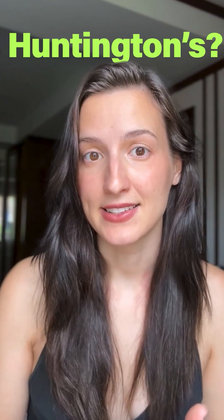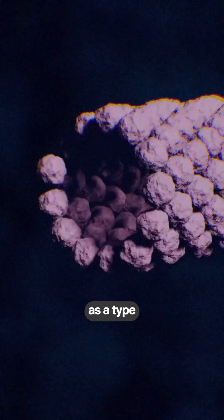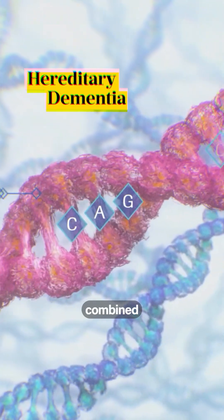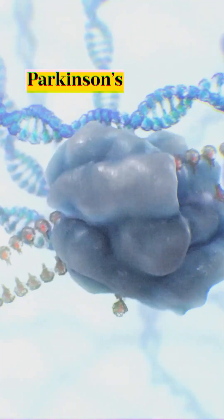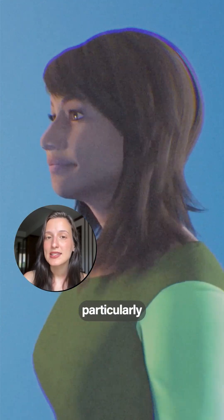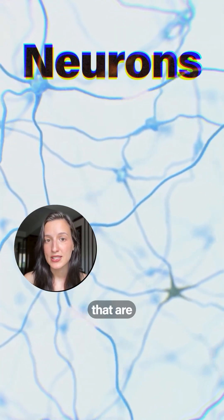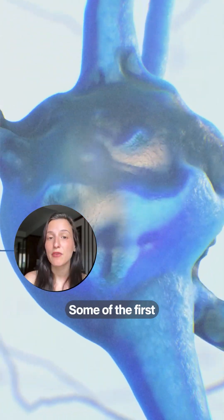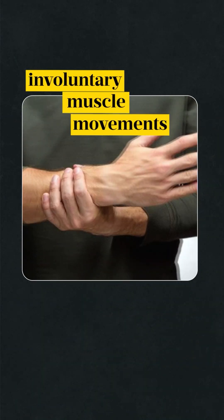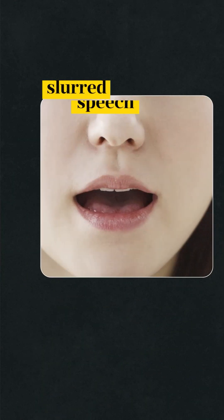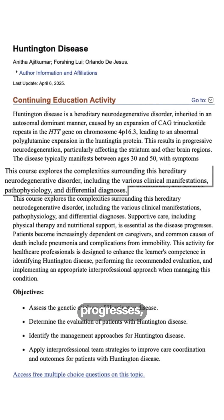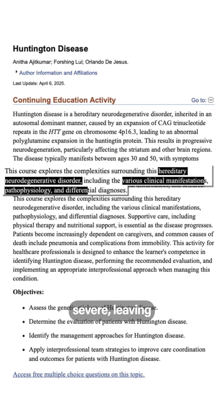So what exactly is Huntington's? It has often been described as a type of hereditary dementia combined with Parkinson's. The reason why is because it particularly affects the neurons that are responsible for movement. Some of the first symptoms are involuntary muscle movements, spasms, or slurred speech. And as the disease progresses, symptoms get more and more severe, leaving most patients needing 24-7 care.